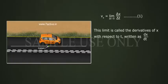This limit is called the derivative of x with respect to t, written as dx by dt. Vx equals to limit delta t tends to zero, delta x by delta t equals to dx by dt.